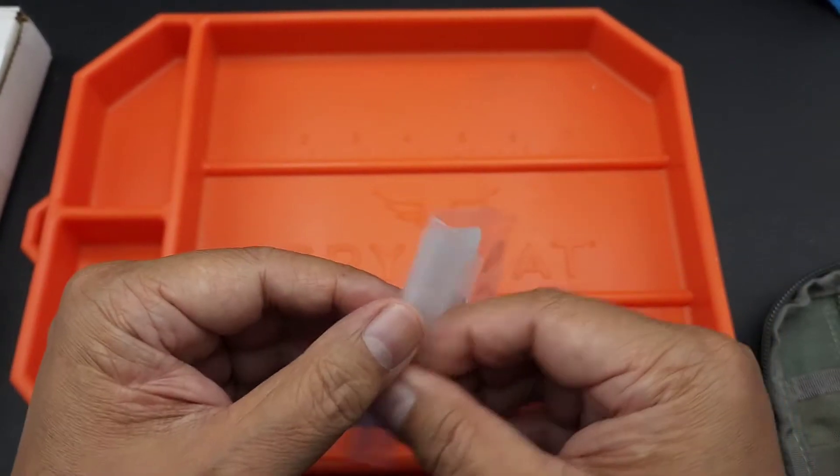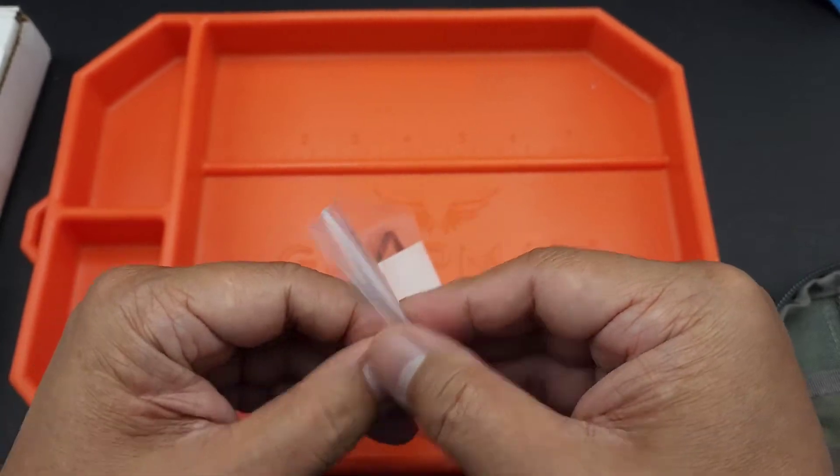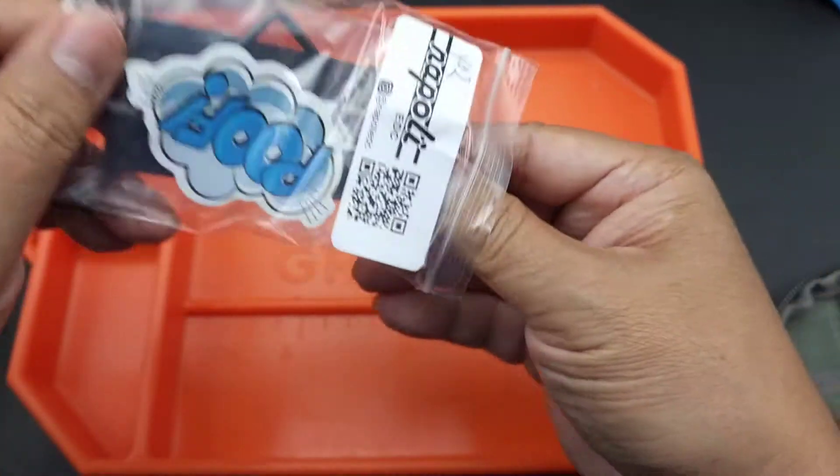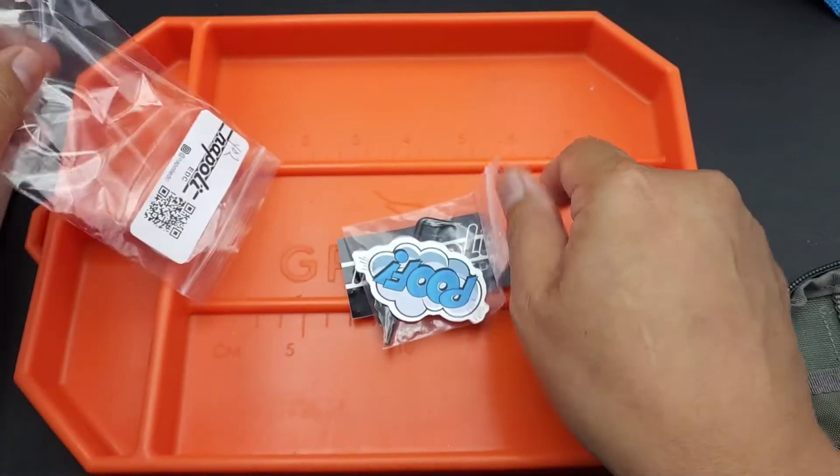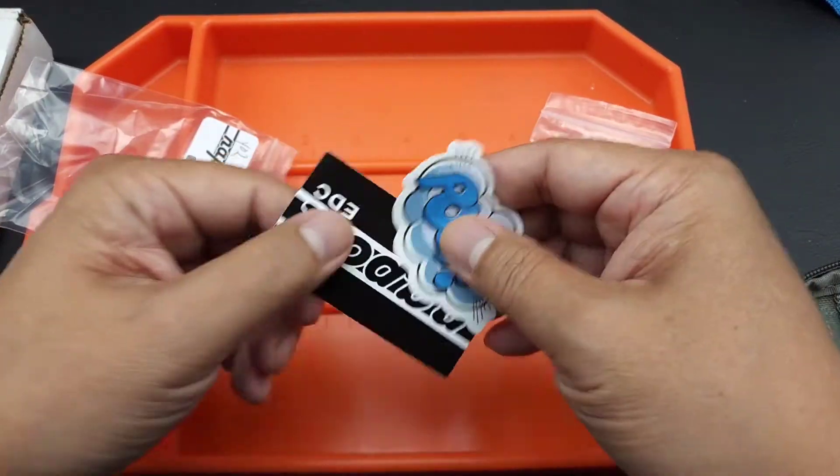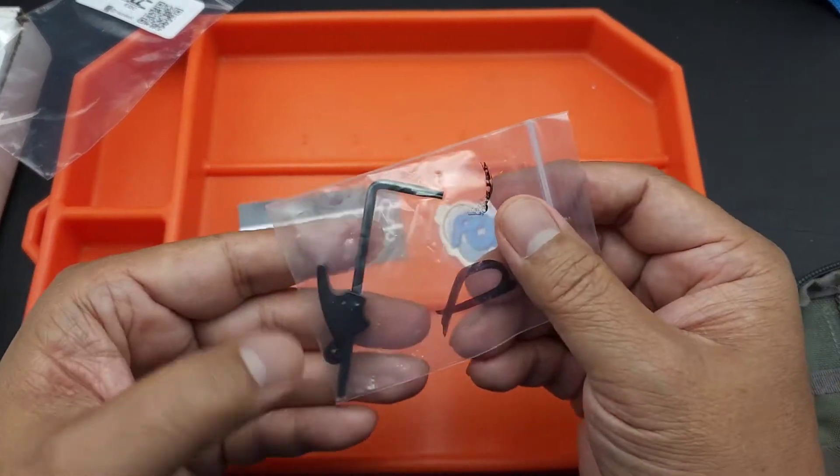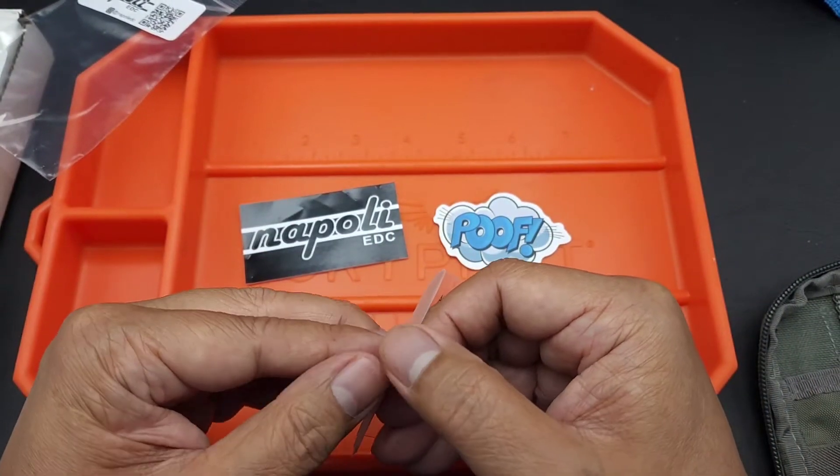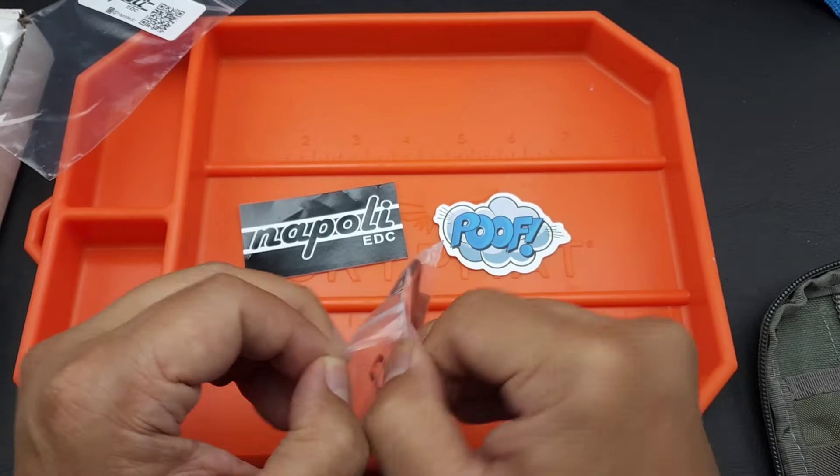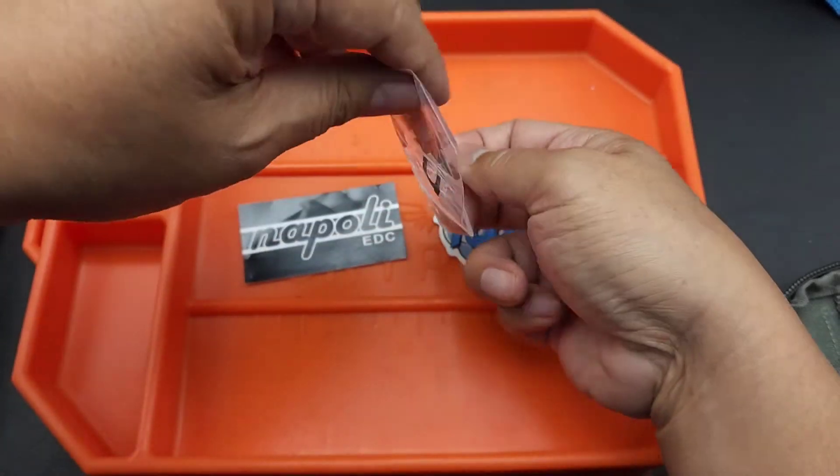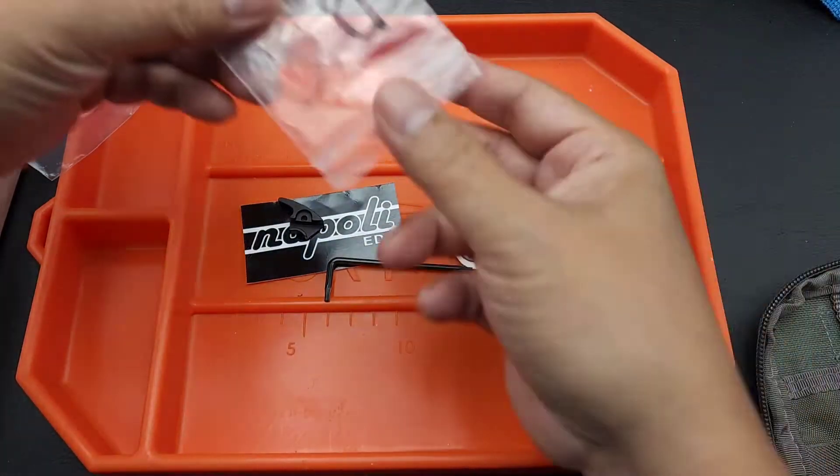Napoli EDC. What do we got? Oh, we got a cool sticker. Cool stickers. I'm not sure if this person is on Instagram. I found them searching for this tool on Etsy.